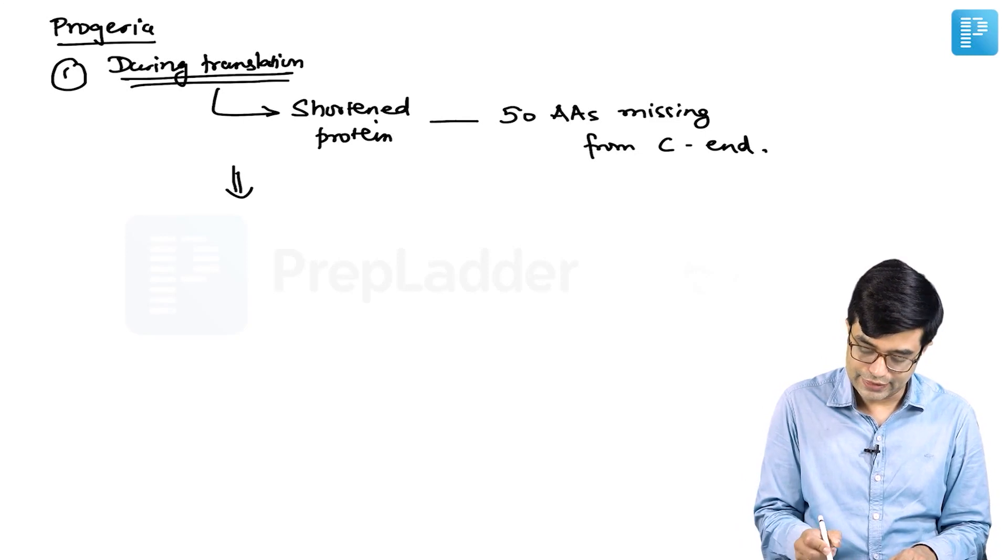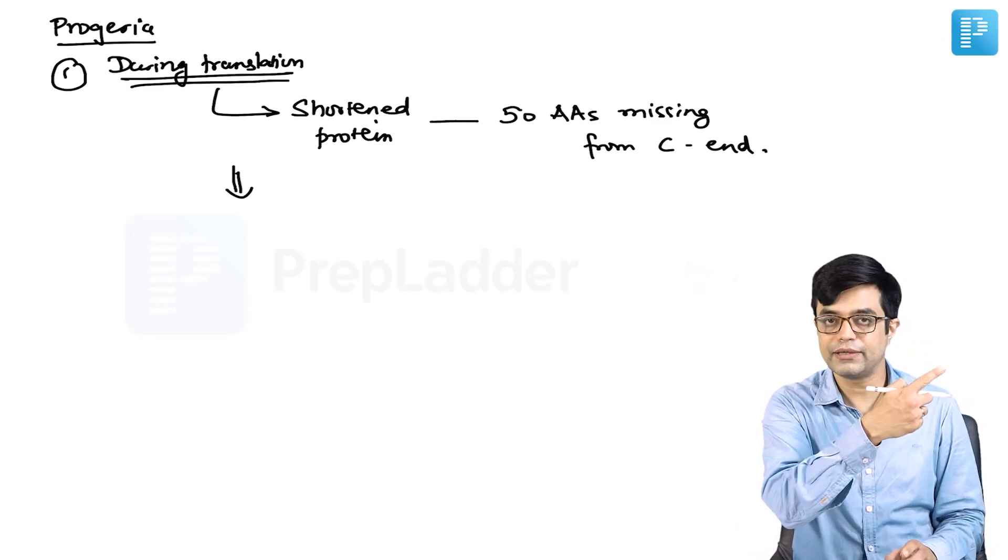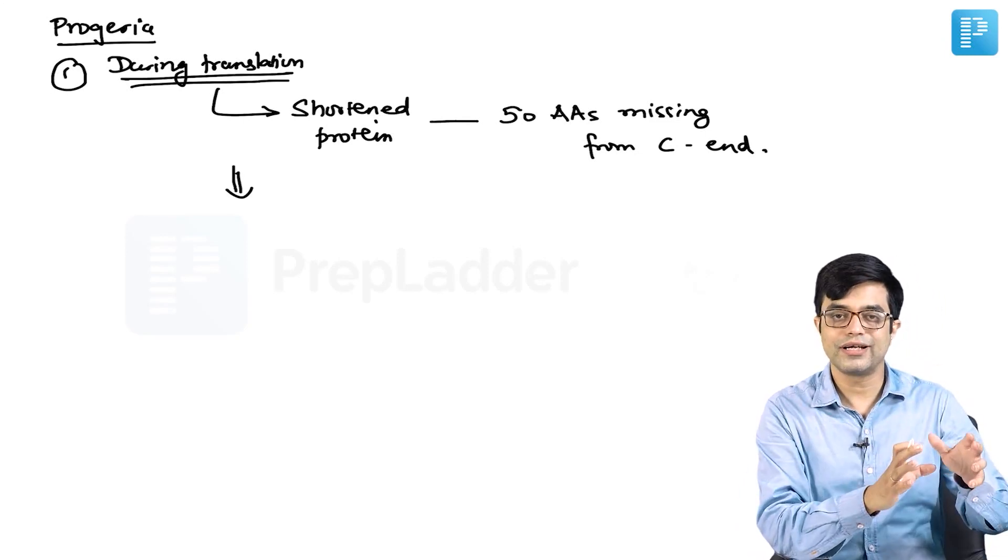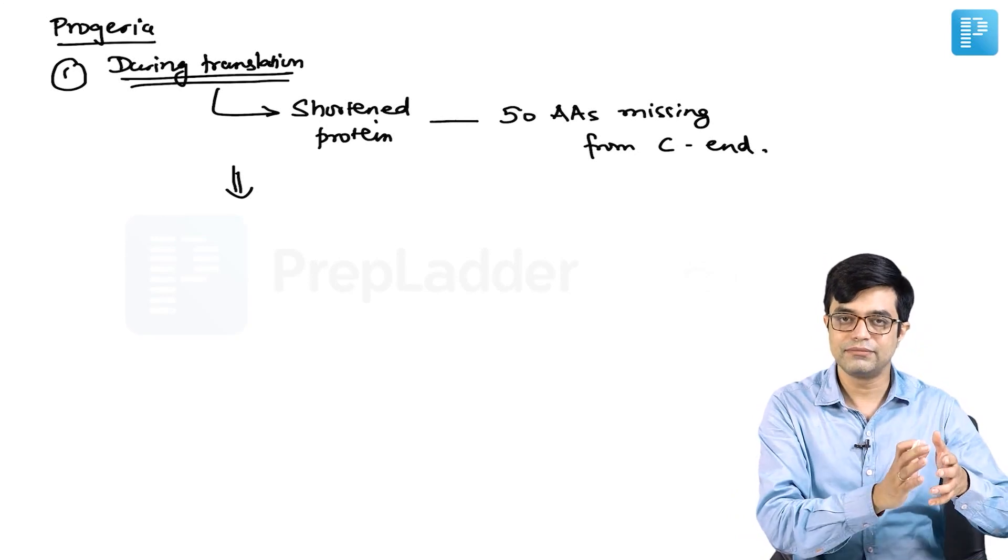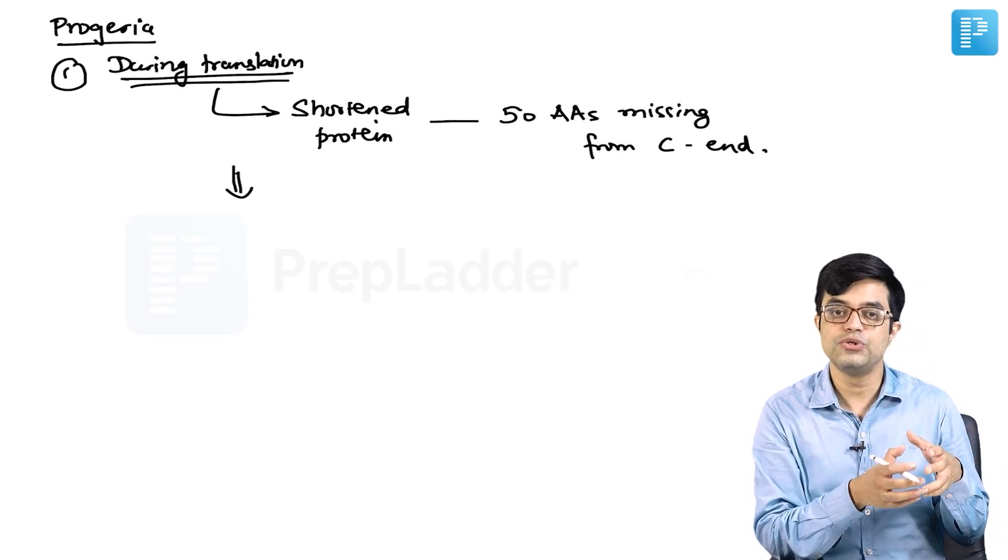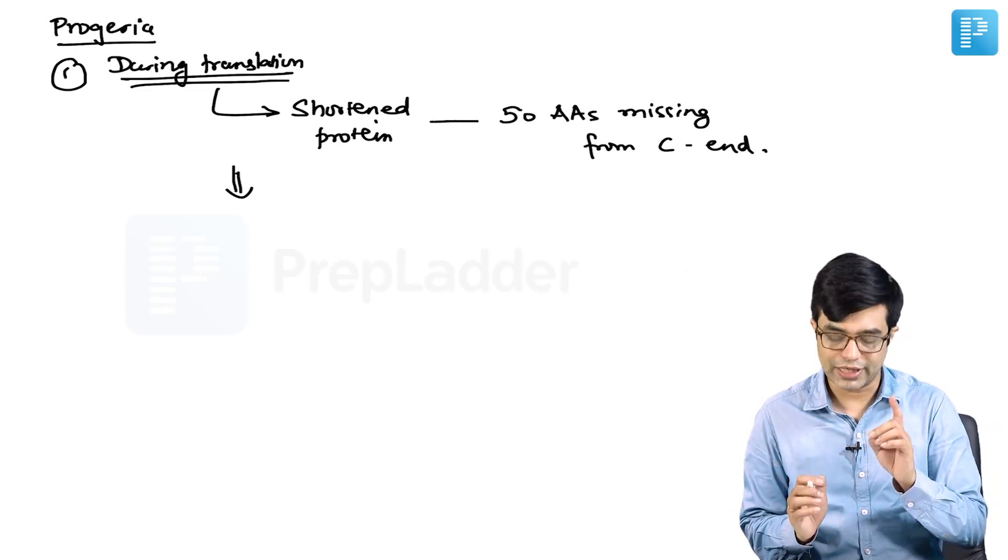This is happening because of those genetic mutations. The alternate splicing mechanism which is usually inactive becomes active due to the mutation.